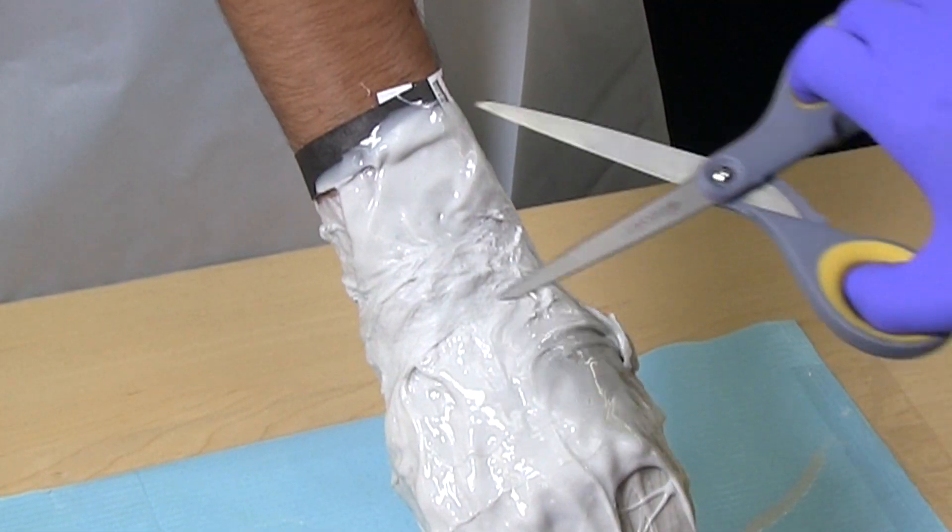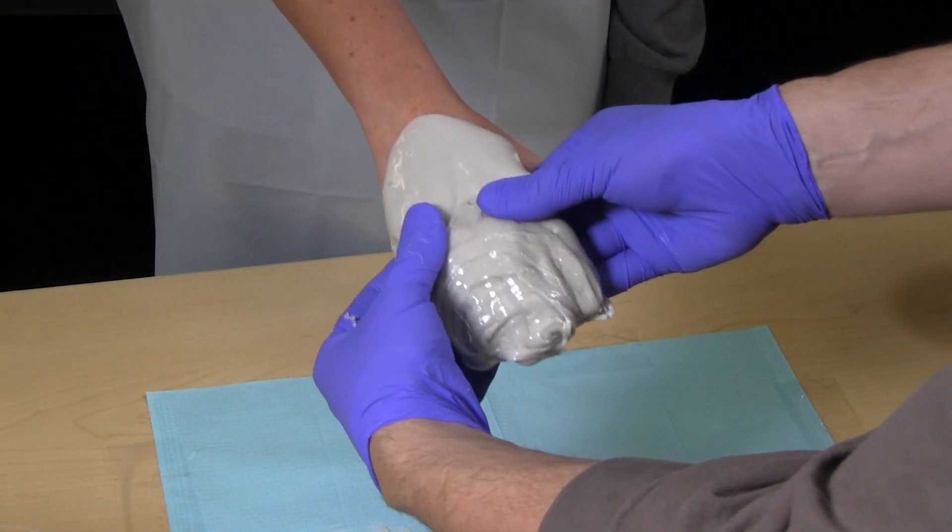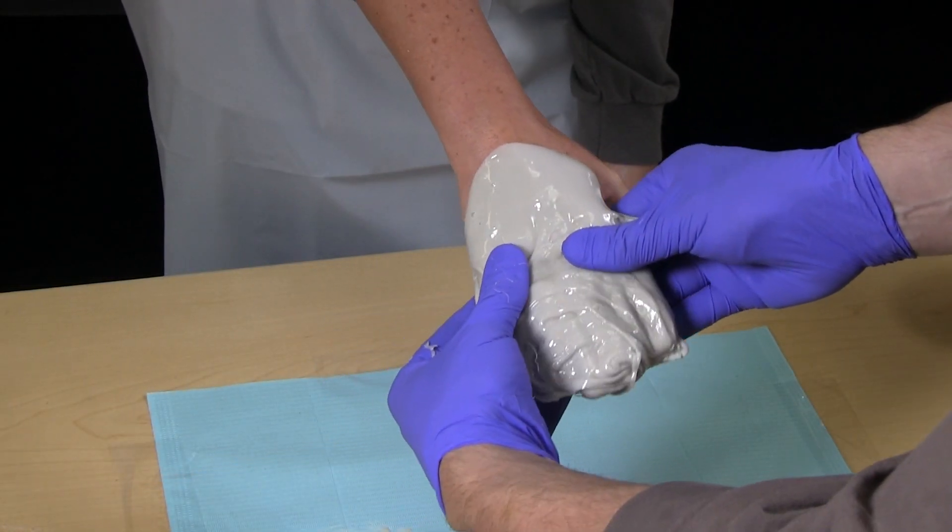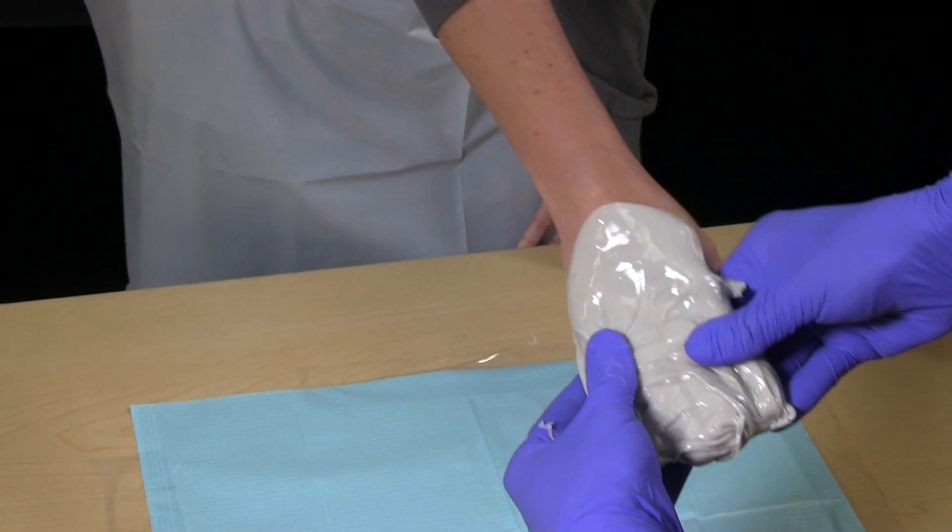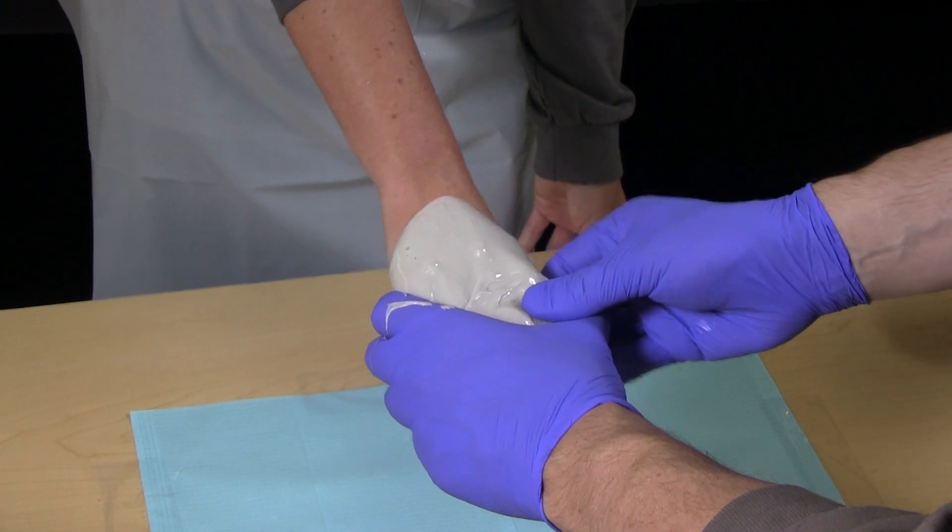Never use scissors or sharp objects to remove the impression. Instruct the customer to wiggle his or her fingers to break the seal of the mold. Remove the impression at a slow pace to avoid ripping out any surface hairs around the wrist.